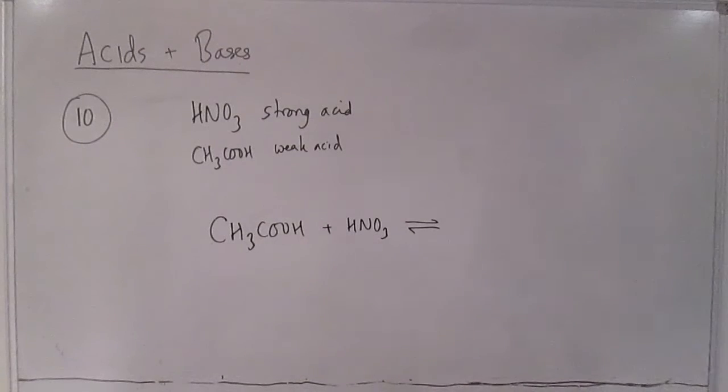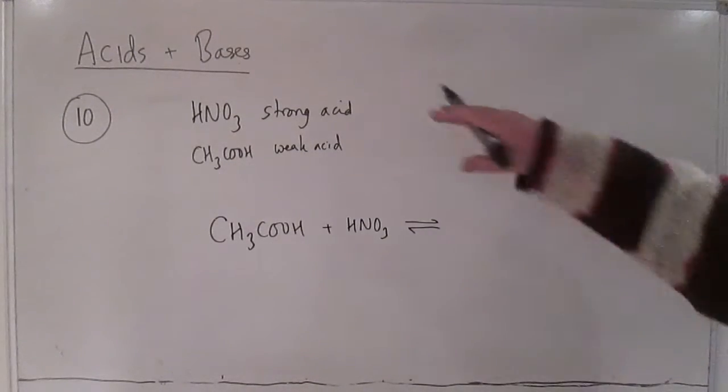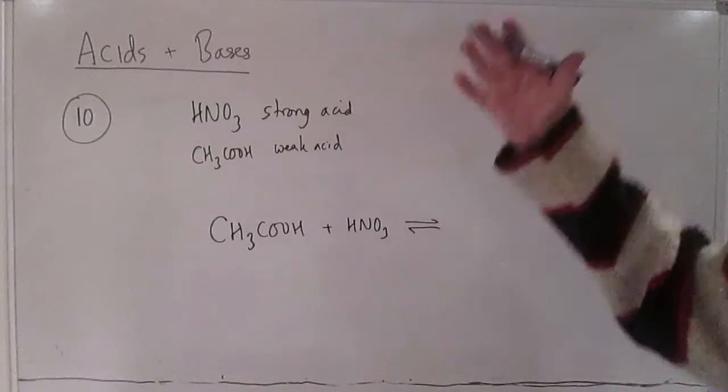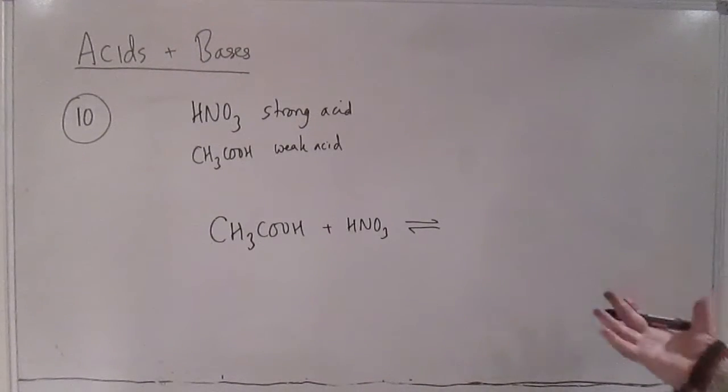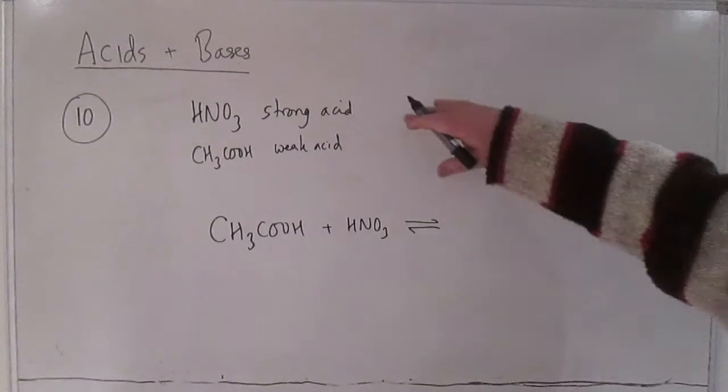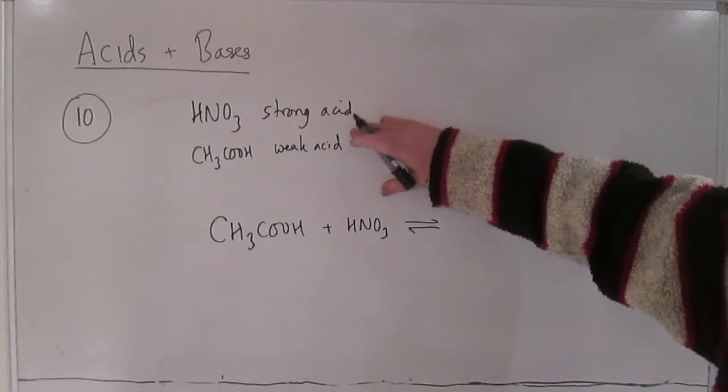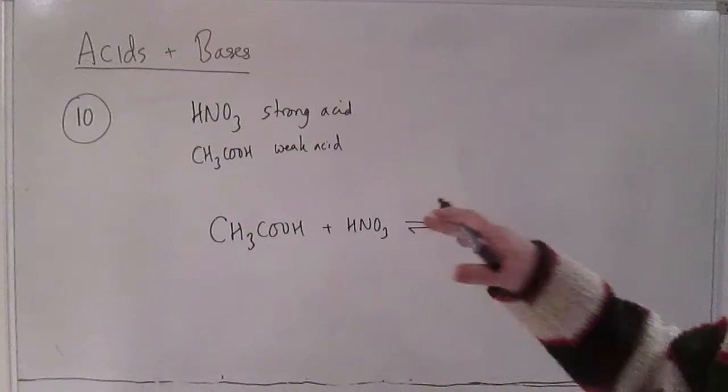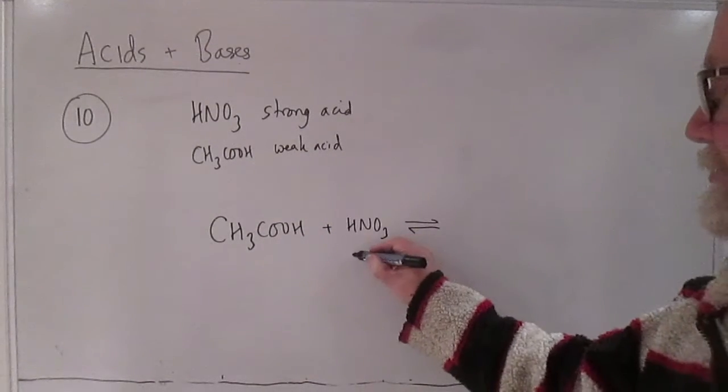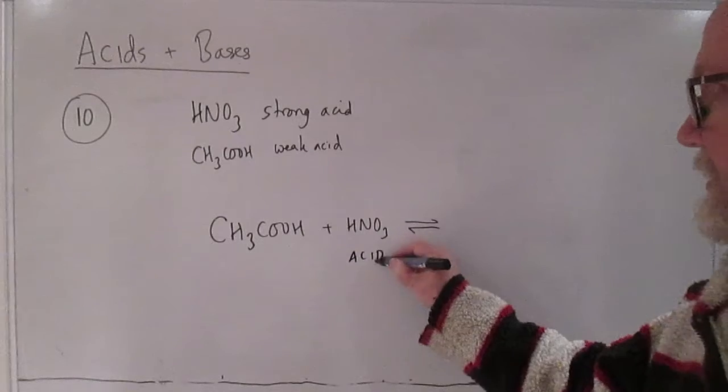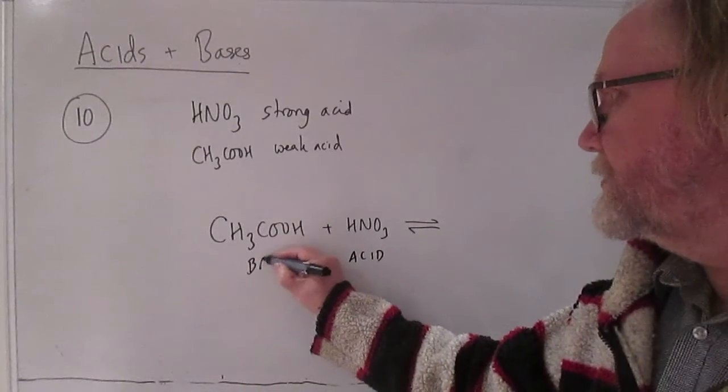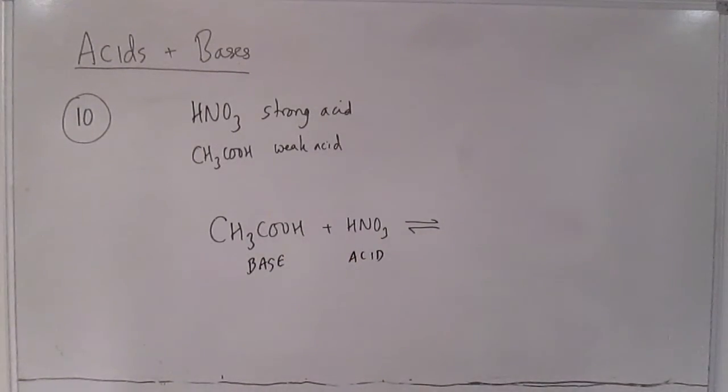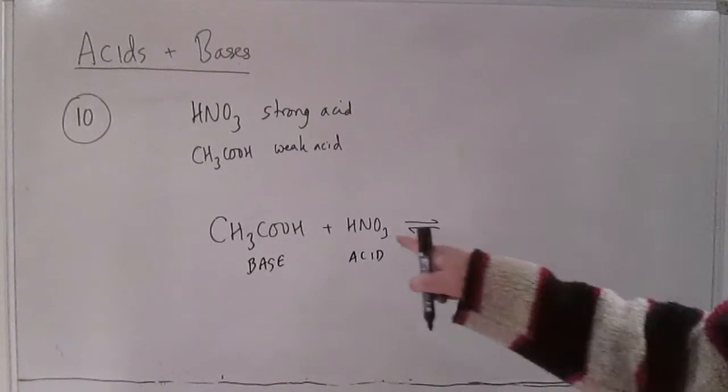And generally the rule that you can apply is that whichever one is the stronger acid will function as the acid, that's something that seems logical and generally that will work. So you look at these two and you say right nitric acid is clearly a stronger acid than ethanoic so if these are going to undergo an acid-base reaction this one is going to be the acid and this one is going to be the base.